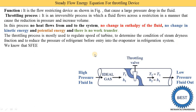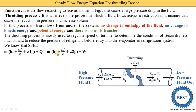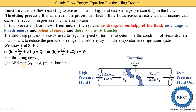We derive the steady flow energy equations. The SFEE is: M(H1 + C1²/2 + Z1G) + Q = M(H2 + C2²/2 + Z2G) + W. For the throttling device, change in potential energy is zero — Z1 and Z2 are equal since the pipe is horizontal, so Z1G and Z2G cancel. Change in kinetic energy is zero — C1 and C2 are equal, as already mentioned. The inlet and outlet levels in the diagram are the same.